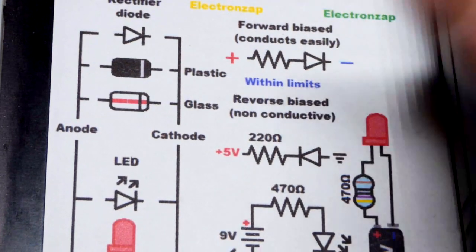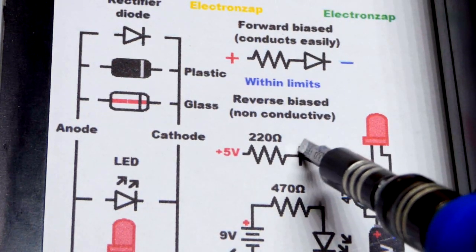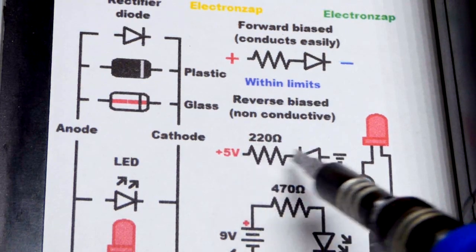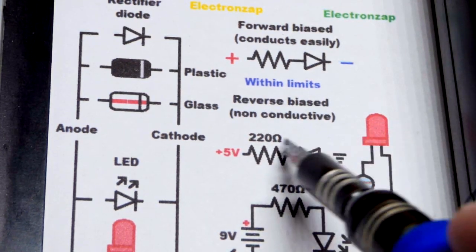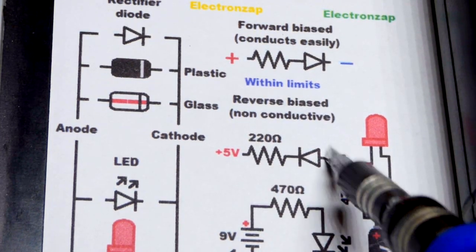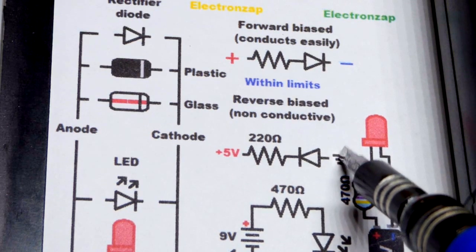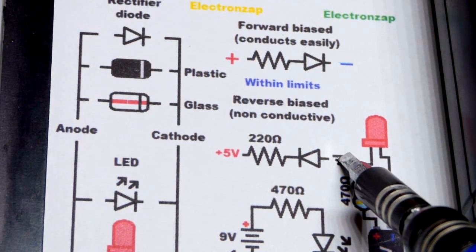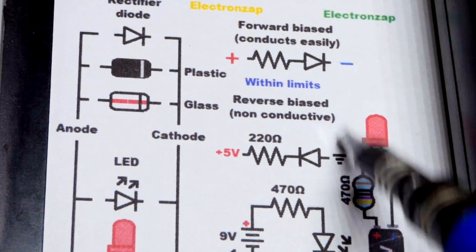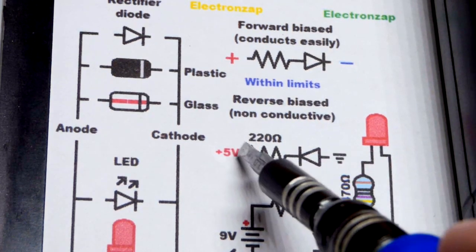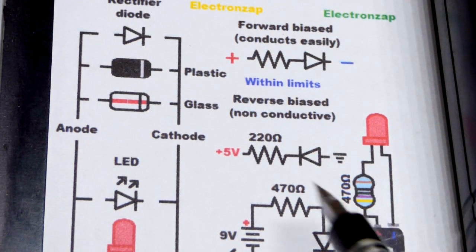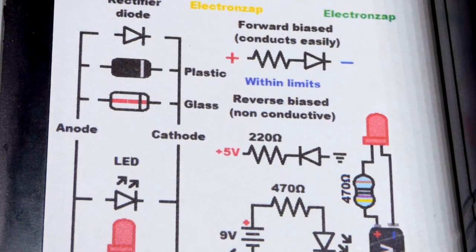Down here we have a reverse biased diode — cathode to the positive side of the supply. This is a 5-volt supply, which is what I have the power supply set to right now. The ground symbol here is usually connected to the negative supply, which we declare 0 volts, and the positive side is the voltage difference. So if it's 5 volts, that's a 5-volt difference — which is why this diode is not going to conduct.